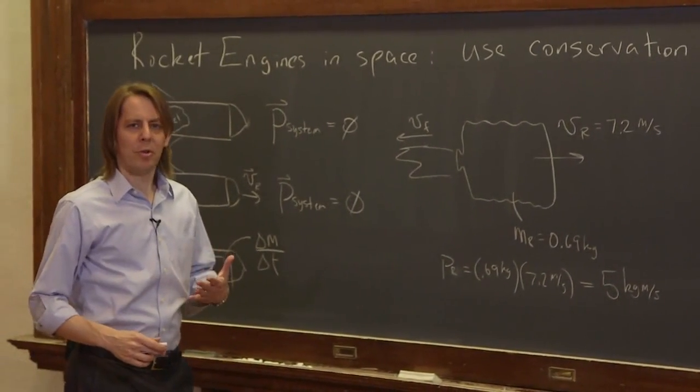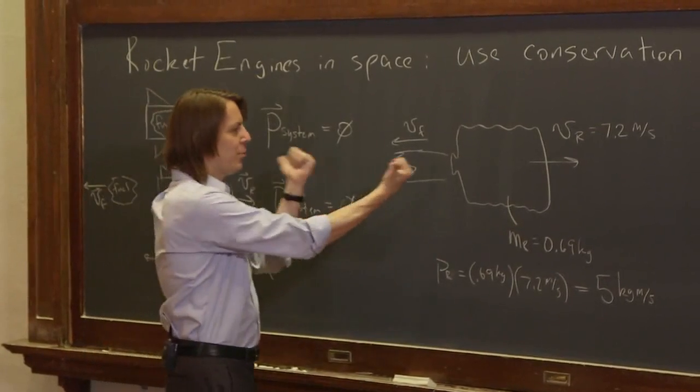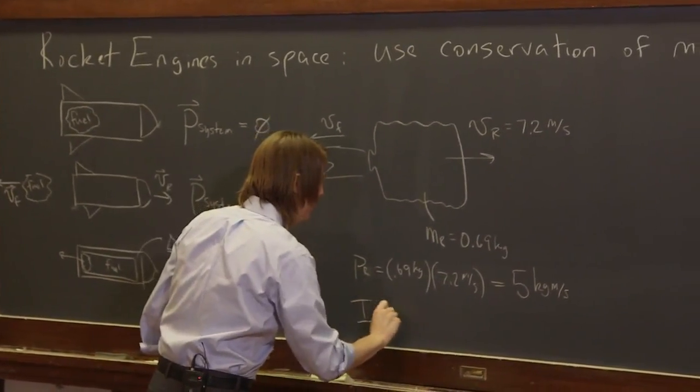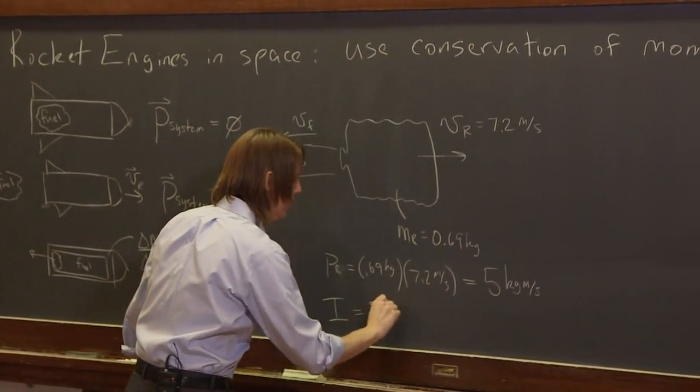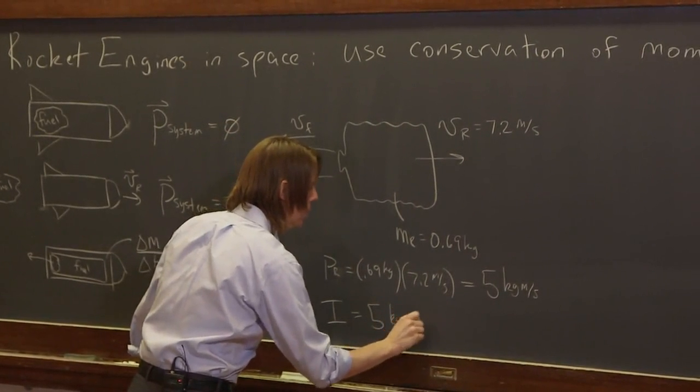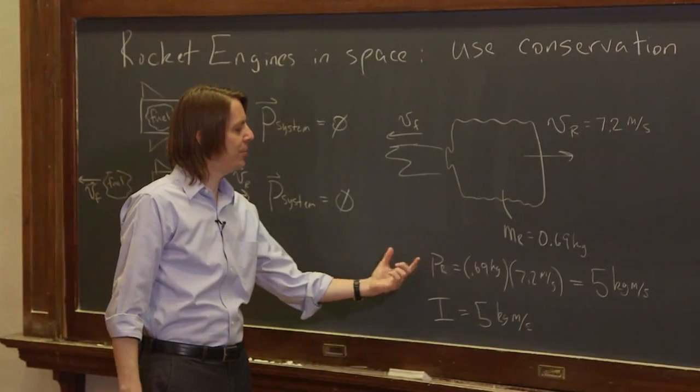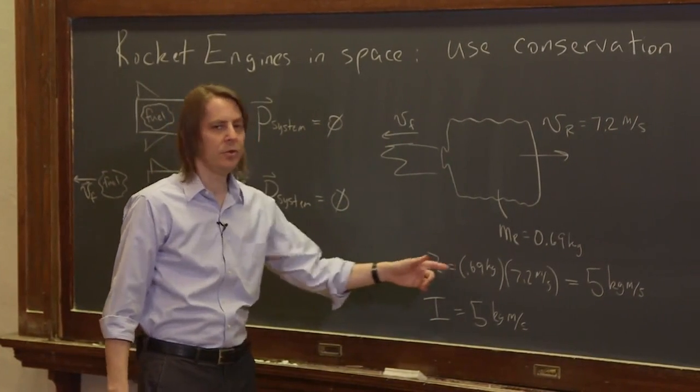So if we want to think in terms of impulse, even though it's internal, we can think of the impulse each applied to the other and still conserve momentum. Then the impulse is also 5 kilogram meters per second, because the impulse is equal to the change in momentum. This really is the change from 0 to 5.